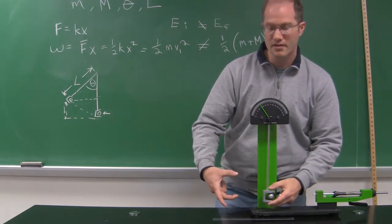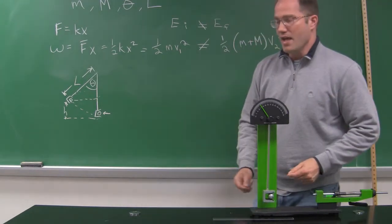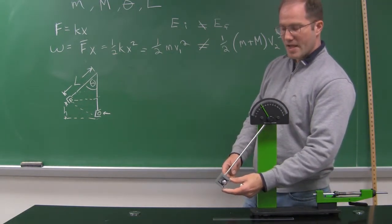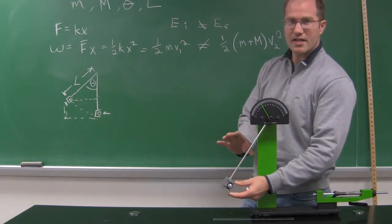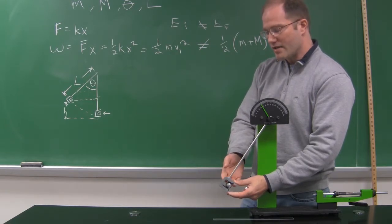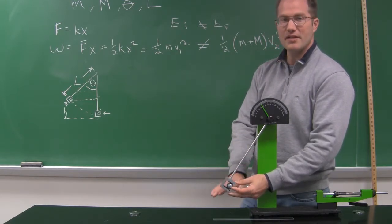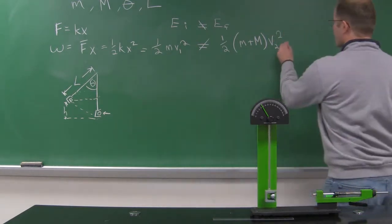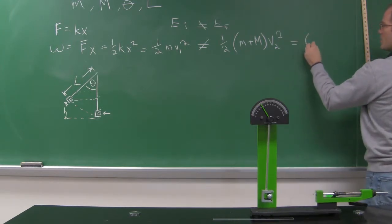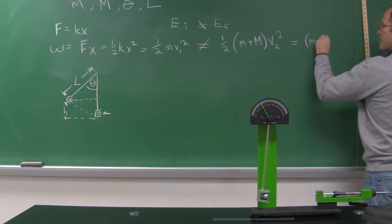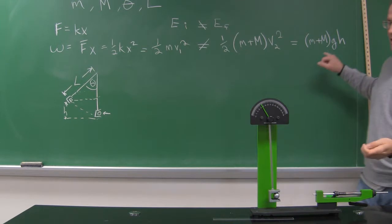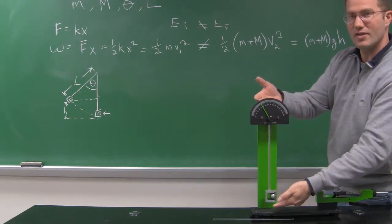The ball and pendulum have risen a certain height off of the original point. At that point it stops moving and goes back the other way. When it comes to a stop, all the kinetic energy of the ball and cup has gone to zero. That means all of that kinetic energy is now potential energy, because it has raised a certain height. So the kinetic energy at the bottom of the swing becomes equal to (little m plus big M) times G times H at the top, and H is something we determine by knowing theta and L.